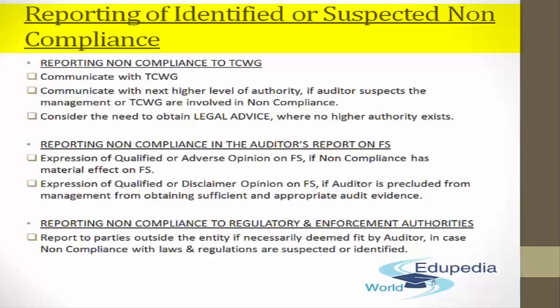If that higher authority exists, communicate with them. If it doesn't exist, then you need to provide that information to the audit committee or supervisory board. And if both these options are not available and the auditor believes that the communication may not be acted upon, then you need to consider the need to obtain legal advice if no higher authority exists. So you communicate with those charged with governance, escalate to the next level higher authority if you suspect management and TCWG are involved, and if no higher authority exists, seek legal advice.